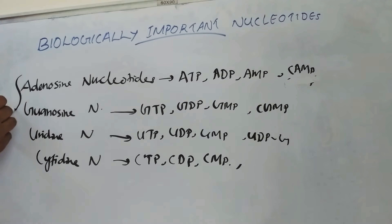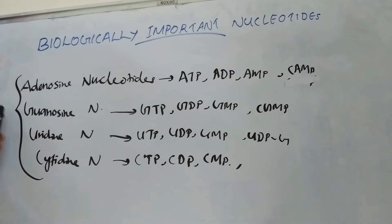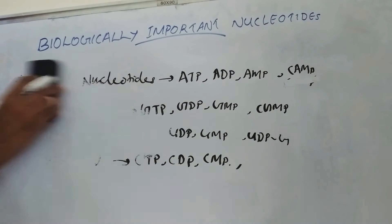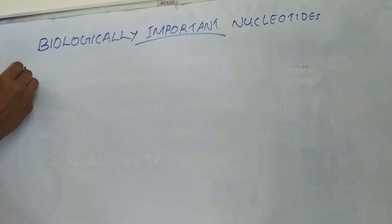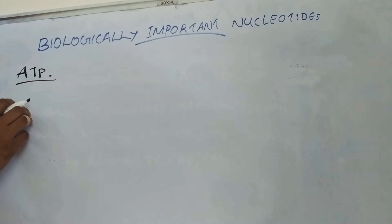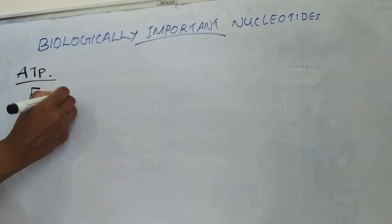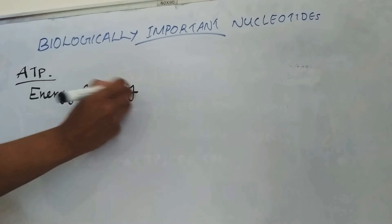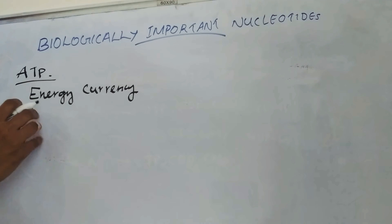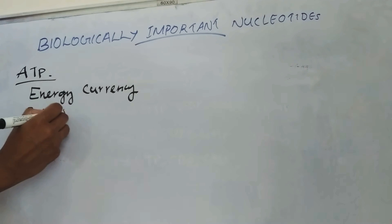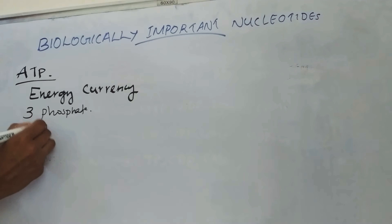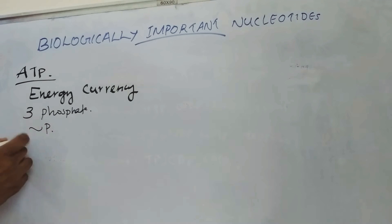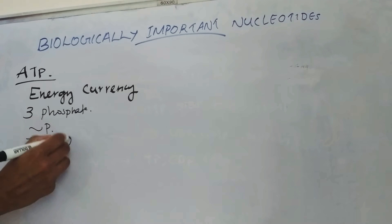These are the biologically important nucleotides. The main important function is that they occur as the integral part of DNA and RNA, that is nucleic acids. Coming to ATP, that is adenosine triphosphate — ATP is known as the energy currency of the cell. It has three phosphate residues, of which two phosphate residues are high energy phosphates. On hydrolysis, each releases 7.6 kilocalories of energy.